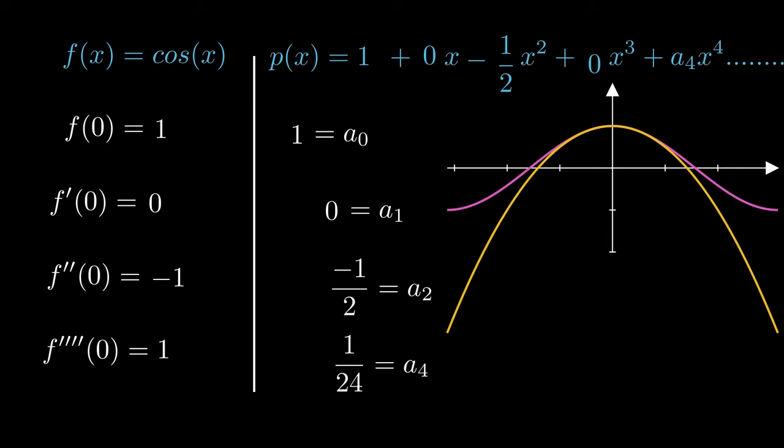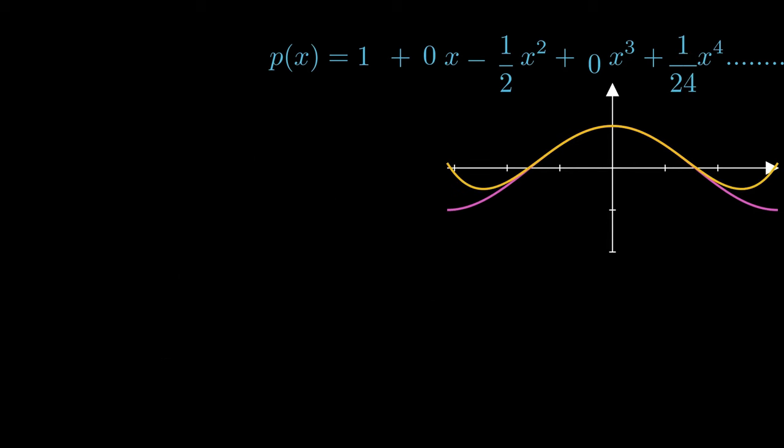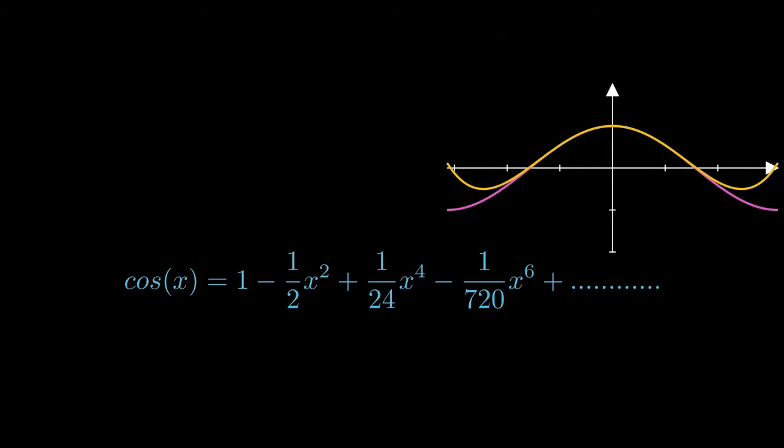These coefficients are then inserted into the original polynomial function to finally get the polynomial version of cos x. You might notice the denominator terms are actually factorials of the powers, which will make more sense to you when we go further for our general proof.